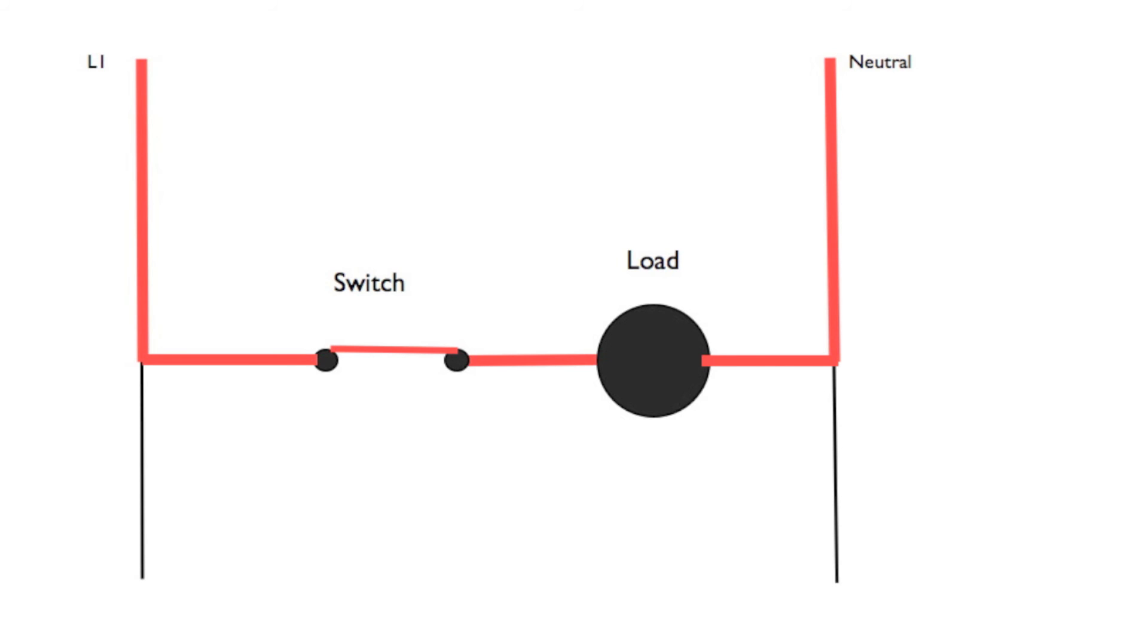And if I were to read this diagram, I would say there's power to the load through a normally open switch, manual switch. When I close the switch, power passes through the switch and energizes the load. So that is pretty much the simplest out there.